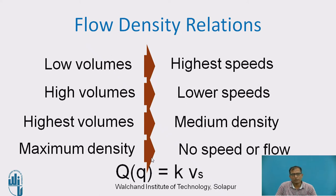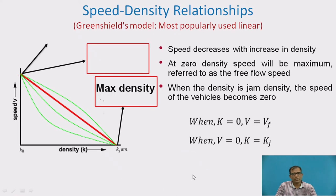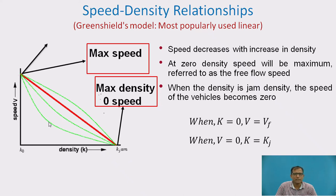This confirms the equation q = k × v. For the speed-density relationship: as density increases, speed decreases, because the distance between vehicles reduces as speed reduces, causing density to attain a maximum value.